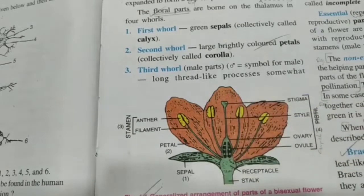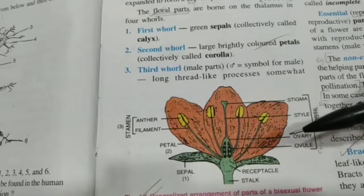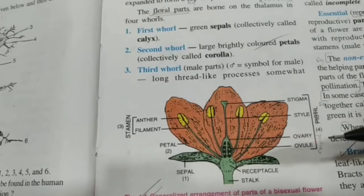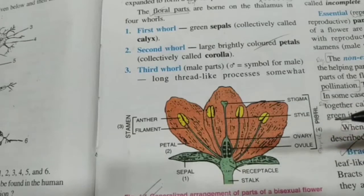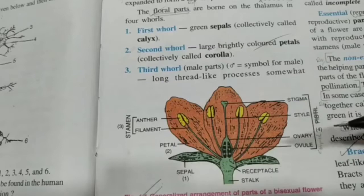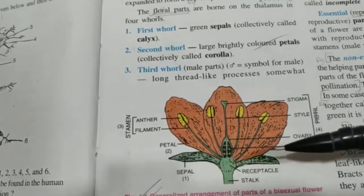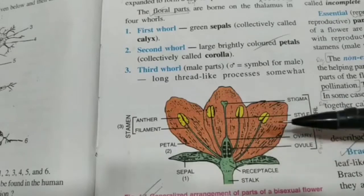Out of these four whorls, two are essential for reproduction — the stamens and the carpels. Without them reproduction is impossible, so they are called the essential parts or the reproductive parts of a flower. Apart from this, we have certain non-essential parts, also called accessory parts. They simply help the reproductive parts complete their function, making the flower more attractive for pollination or protecting the reproductive parts. The sepals and petals are not essential — even if they are absent, reproduction can still take place — so they are called accessory or non-essential parts of the flower.